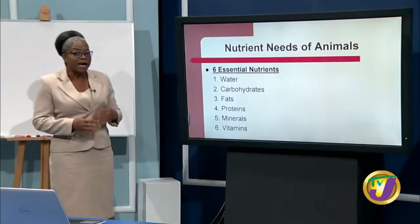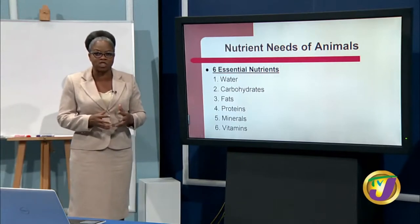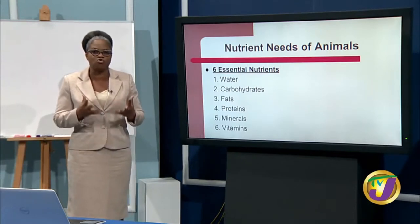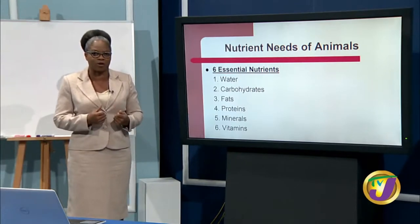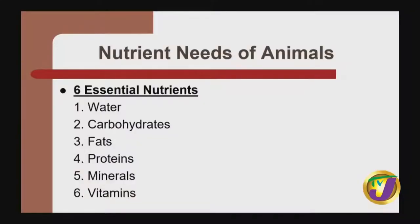Animals need six essential nutrients in order to grow and to develop: water, carbohydrates, fats, proteins, minerals, and vitamins.